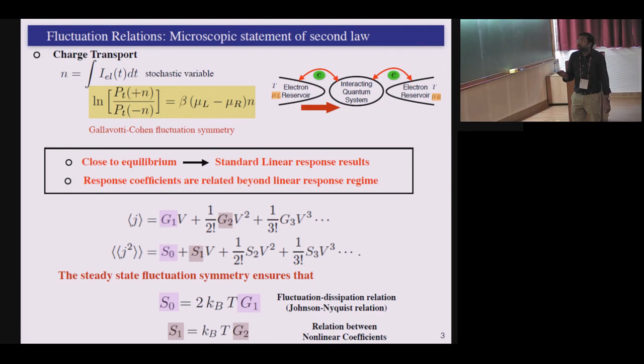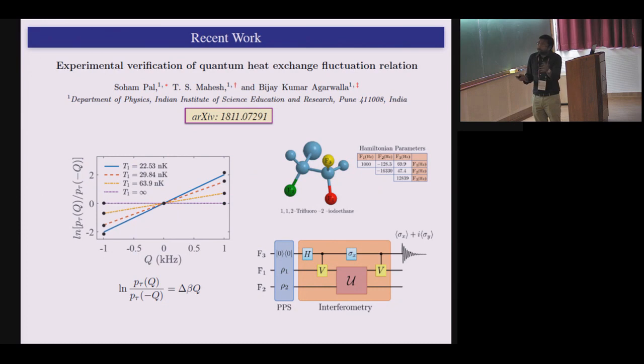And because of this consequence, of course, this is universal in the linear response as well as far from equilibrium. So what you can have is if you take the close to equilibrium limit, you of course get back the standard linear response theory that we know a long time back. But on top of that, what you start to get is the relation between these transport coefficients in the higher orders. So because of this, now not only you have this relation, which was already there, you also start getting relations between higher orders. So that's an implication of fluctuation relation.